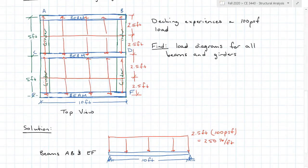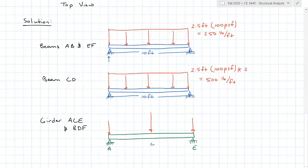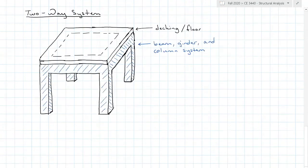Next are our girders, drawn here in green. They are experiencing load contact points at B, D, and F on one side and A, C, and E on the other. The girder has three point loads where the beams attach at A, C, and E. The magnitudes come from the beams with their evenly distributed, symmetrically supported loads. Beam AB has reactions of 1,250 pounds on either side. Beam CD doubles that because it has load from both sides, so its reactions are 2,500 pounds at either end. Transferred to the girder: 1,250 pounds at A, 2,500 pounds at C, and 1,250 pounds at E.